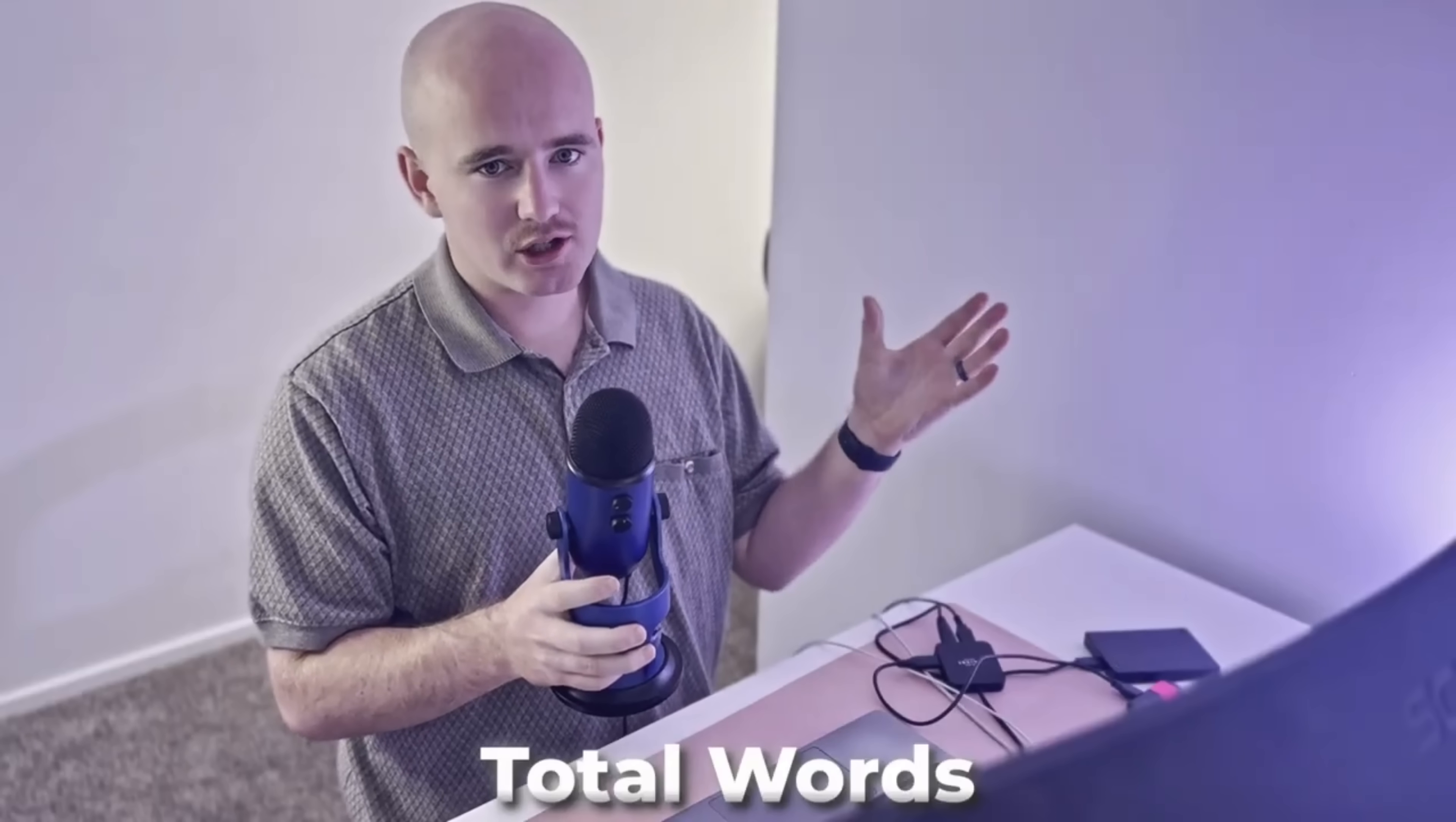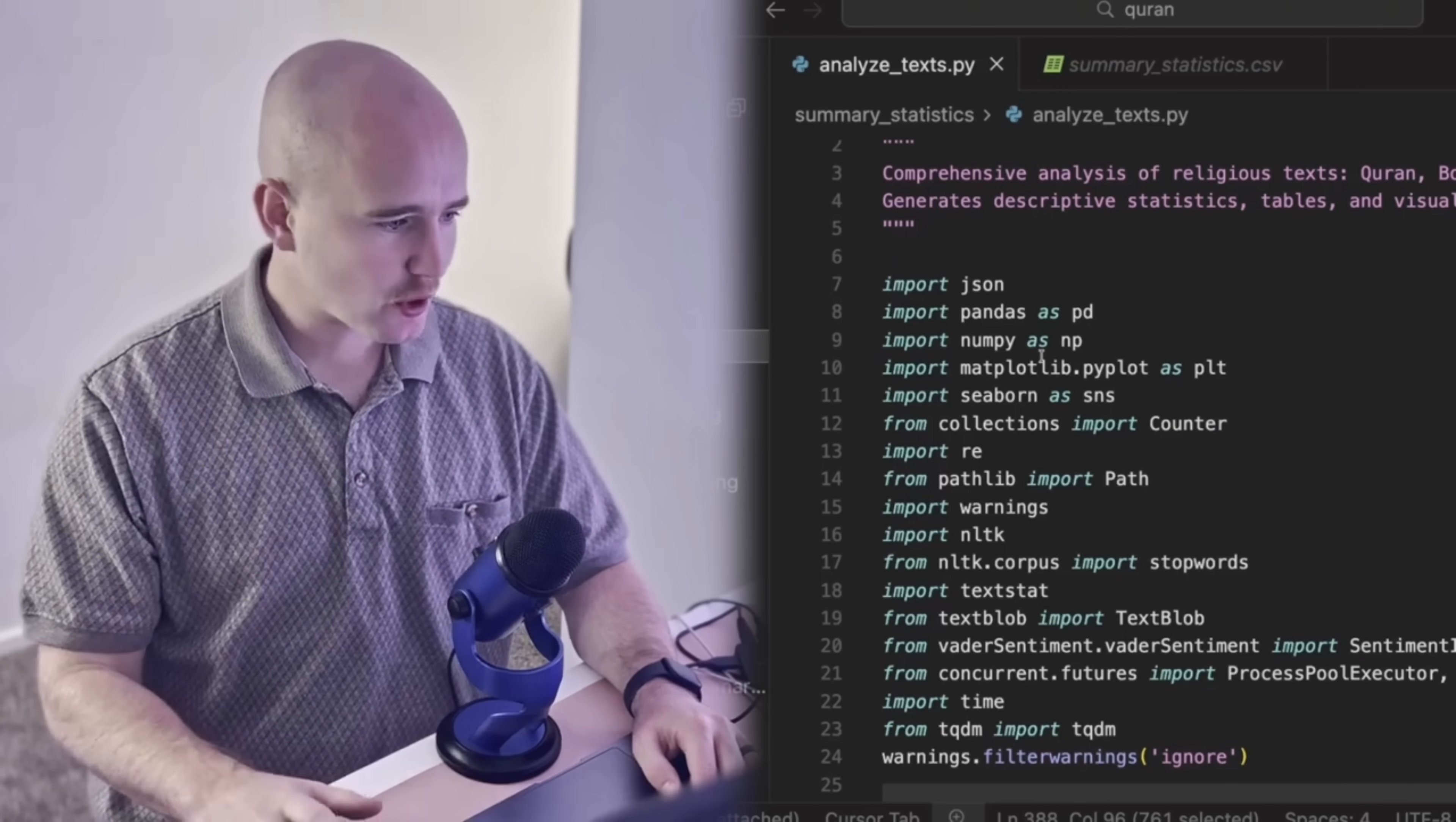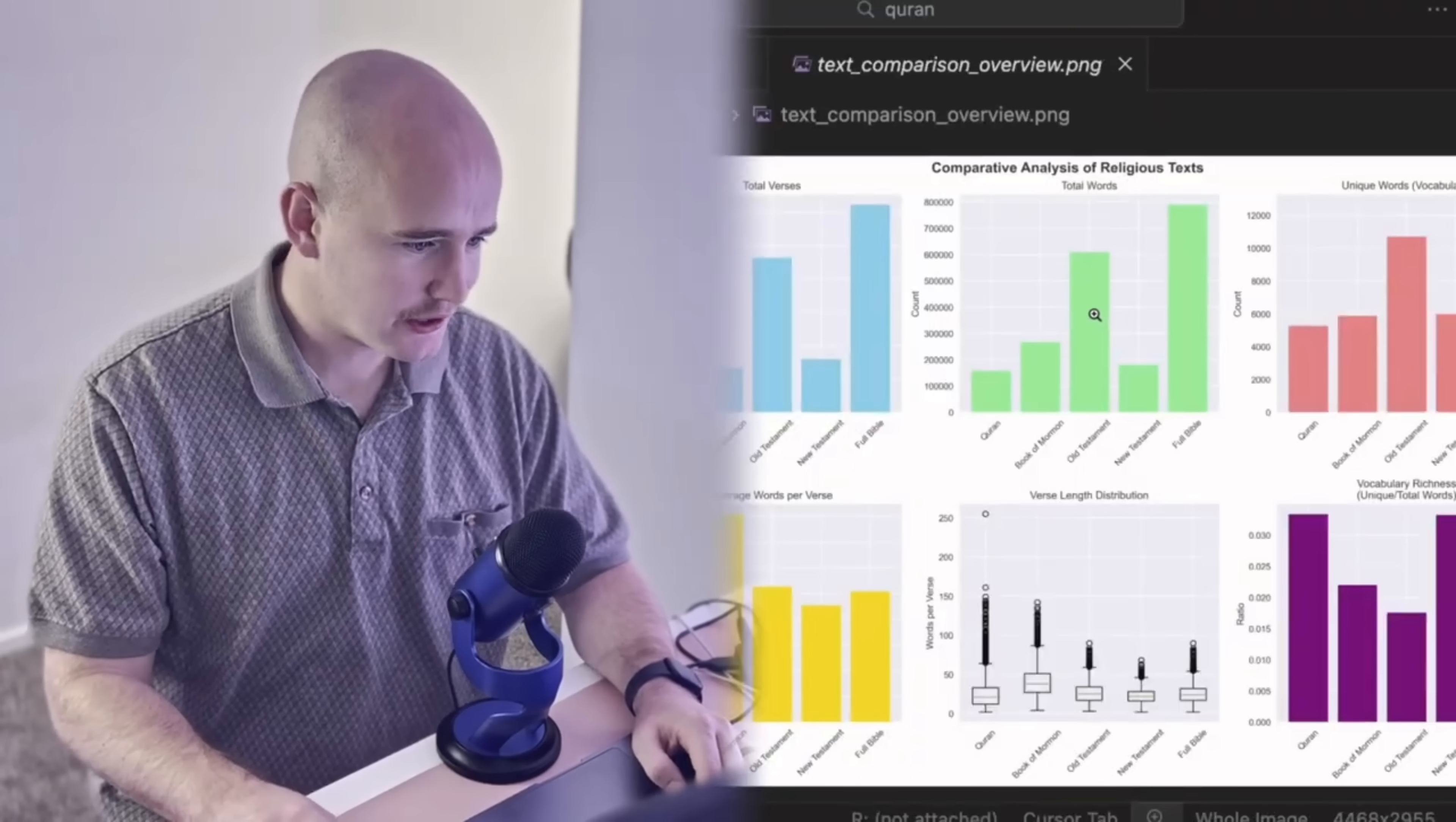Now, before we dig too deep, it's helpful to take a bird's eye view of everything. And so the first thing that I always like to do is just to get some basic summary statistics. I'm going to pull the total words in each book, the reading level, and some other basic metrics for us to kind of understand the data at large. And so I have a script right here that does that along some other basic visualizations.